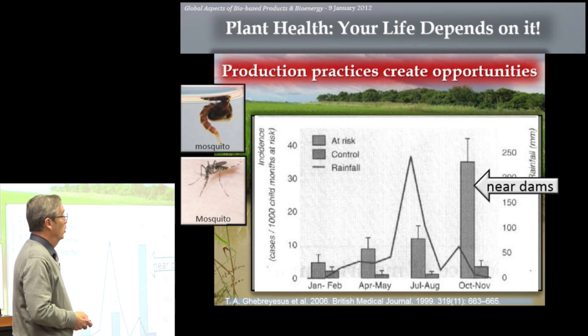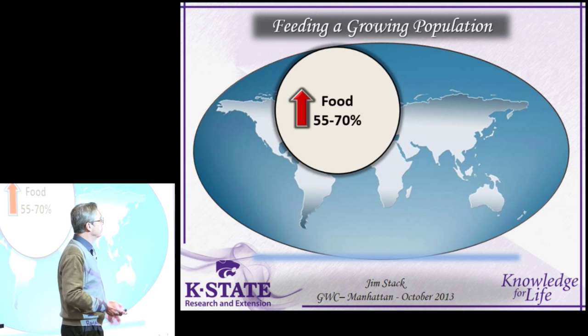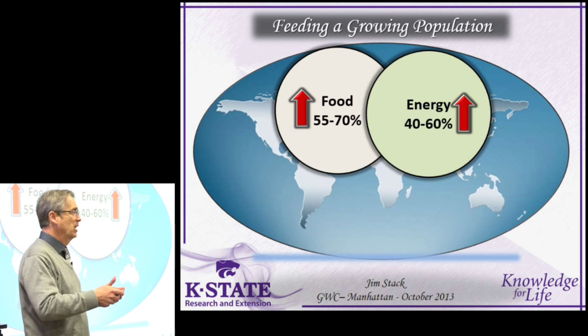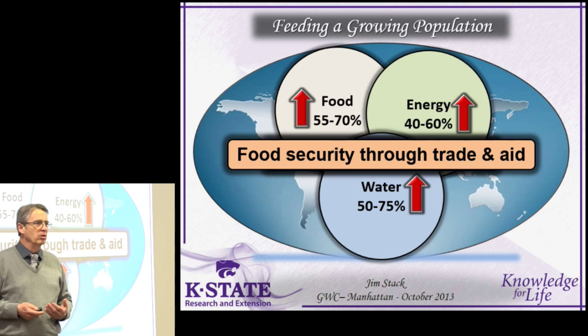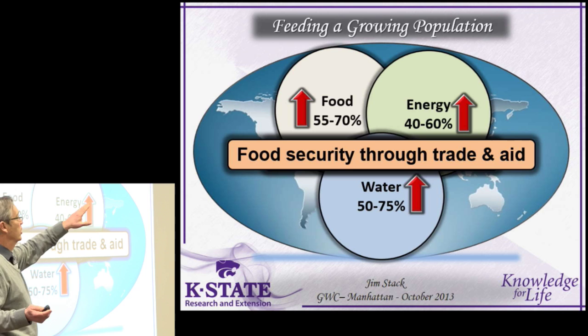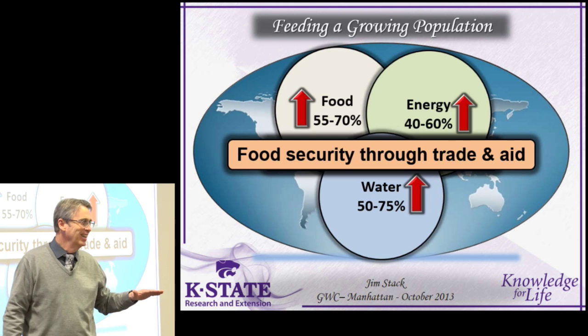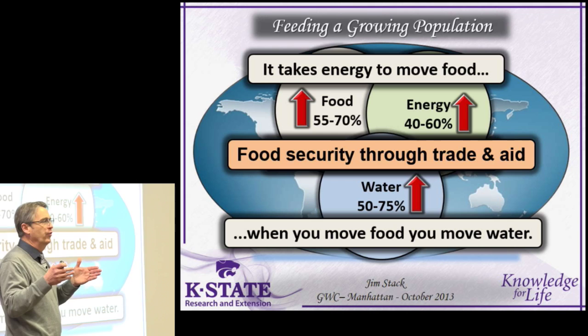So as we implement those intensification practices to raise food production, we have other issues. We need to increase food production by some number — it's going to cost energy, because as you improve people's lives and further urbanize populations, energy and water consumption go up dramatically. There's a nexus: food, water, energy. Our solution to food insecurity is to achieve security through trade and aid. But it takes energy to move food, and when you move food you move water — even grain is 9 to 15 percent water. When you're talking about moving millions of metric tons of grain, you're moving water from one place to another. Horticultural crops are 50 to 75 percent water — you're moving millions of metric tons.